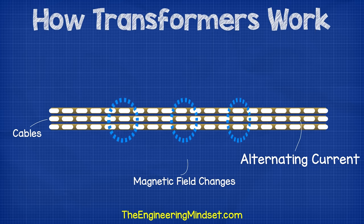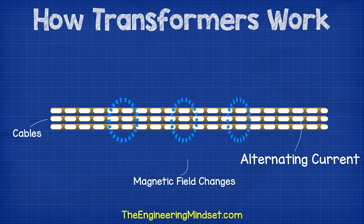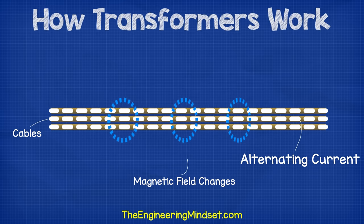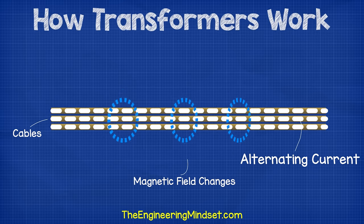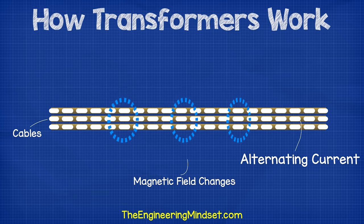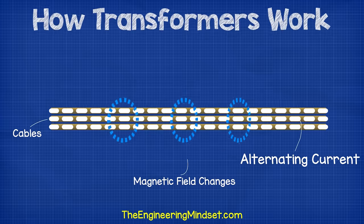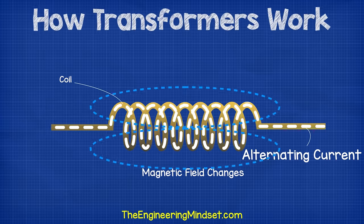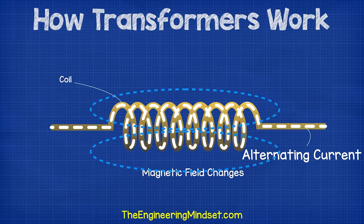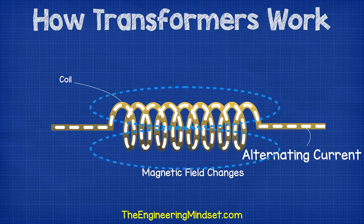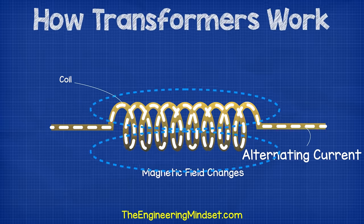If we place multiple cables together and pass current through them, then the magnetic fields will combine to create a stronger magnetic field. If we then wrap the cable into a coil, the magnetic field will become even stronger.